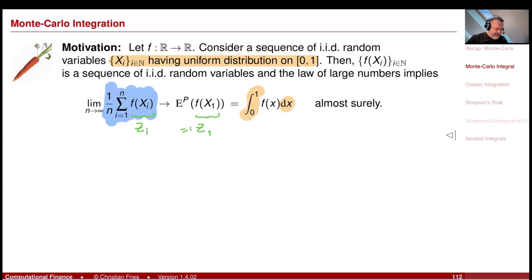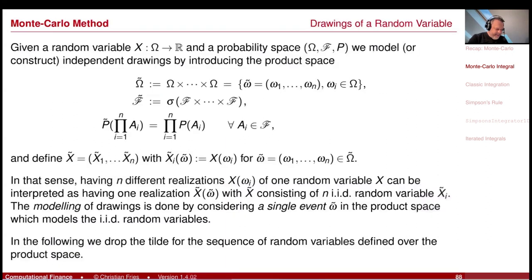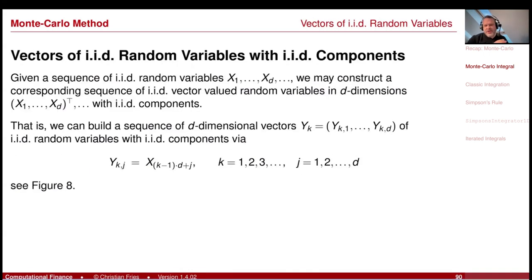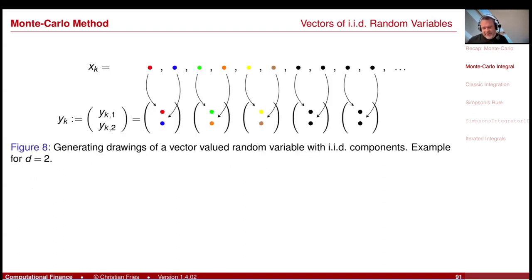Now recall the two aspects I mentioned: first, that a drawing is modeled over the product space; second, that generating a vector of an IID sequence — an IID vector-valued sequence with IID components — is just taking a one-dimensional sequence and populating the entries. These two aspects are responsible for the fact that the Monte Carlo method has a convergence rate which is independent of the dimension, so that it breaks the curse of dimensionality.